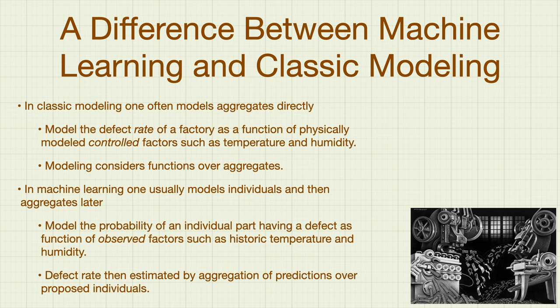There's also an important difference between machine learning and classical modeling like you may have seen in decision science. In classical modeling, you might model a factory as a system that takes aggregate numbers as inputs and outputs — at a certain temperature and humidity it may have a certain defect rate. In machine learning, you would actually model individual items going through the machine, predict whether each one is a defect or not, and get any aggregate defect rate by aggregating up. Very different techniques — the machine learning one is actually rather hard to extend in some cases.